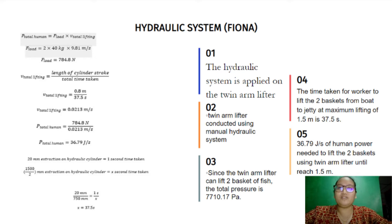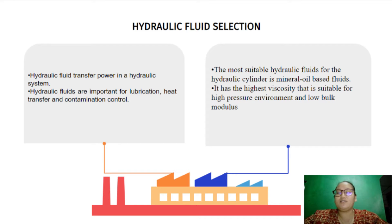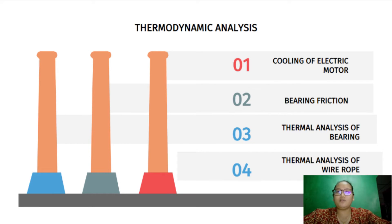36.79 joules per second of human power is needed to lift two baskets using the twin arm lifter until it reaches 1.5 meters. For hydraulic fluid selection, hydraulic fluids are important for lubrication, heat transfer, and contamination control. The most suitable hydraulic fluid for the hydraulic cylinder is mineral oil-based fluid, since it has the highest viscosity suitable for high-pressure environments and low bulk modulus.